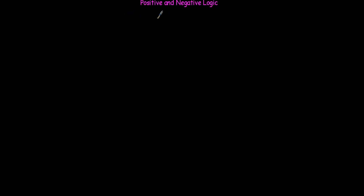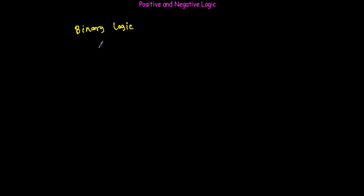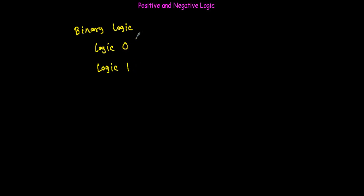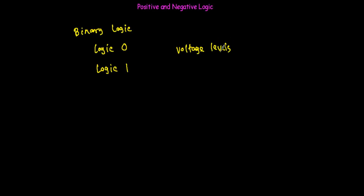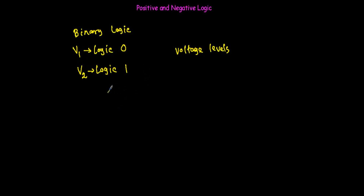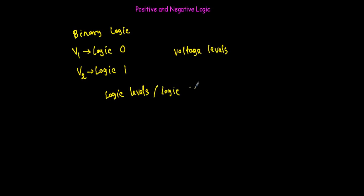In this video I will talk about positive and negative logic. When we have to work with any digital system, we use binary logic — that means we have two logical states: logic zero or logic one. In any digital system, we represent logic zero and logic one by using two voltage levels. To represent logic zero I will use a voltage V1, and to represent logic one I will use a voltage V2. These voltage levels V1 and V2 are termed as logic labels, or sometimes logic voltages.